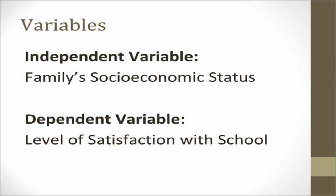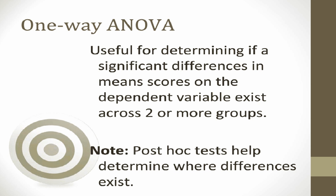The independent variable is family's socioeconomic status. This has three levels: upper class, middle class, and lower class. The dependent variable is level of satisfaction with school. Since we have one dependent variable that is continuous and an independent variable with three levels, a one-way between groups ANOVA is a good choice. A one-way between groups ANOVA is used when you have one dependent continuous variable and one independent variable with three or more groups or levels.